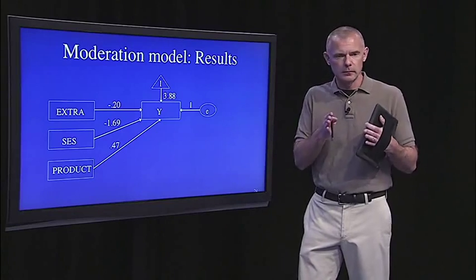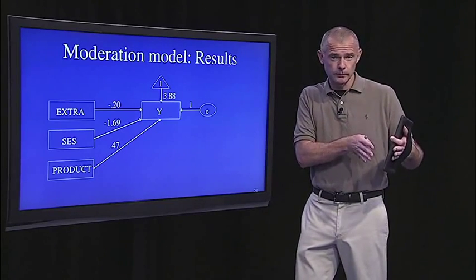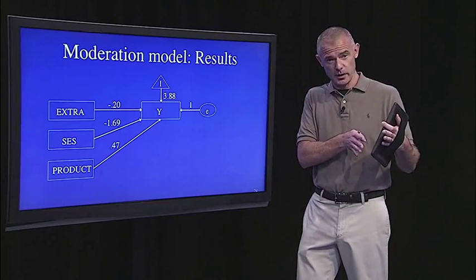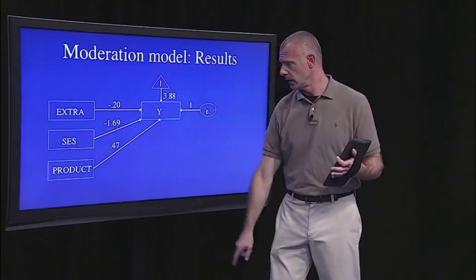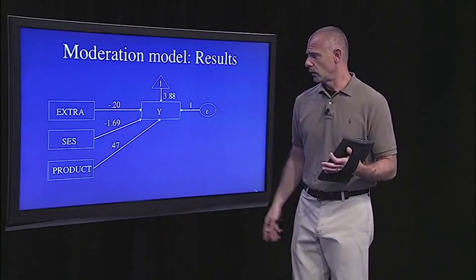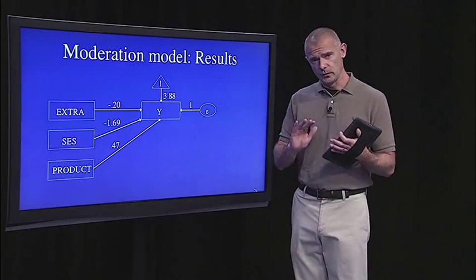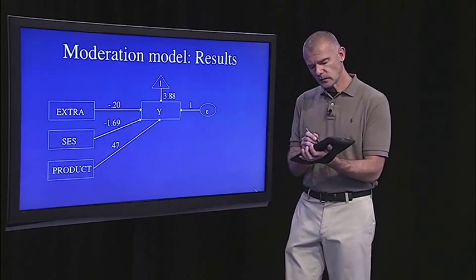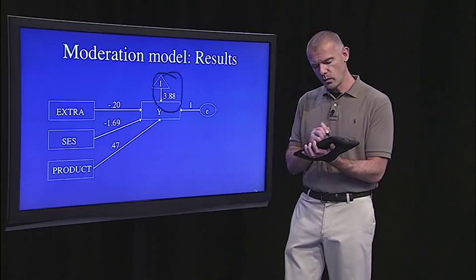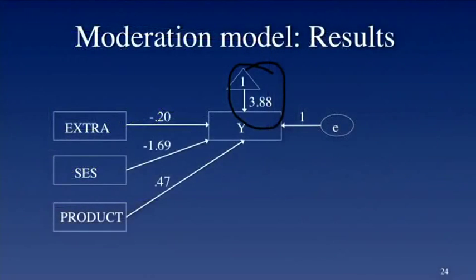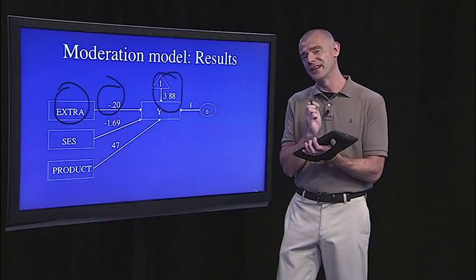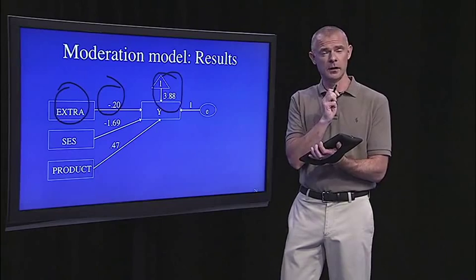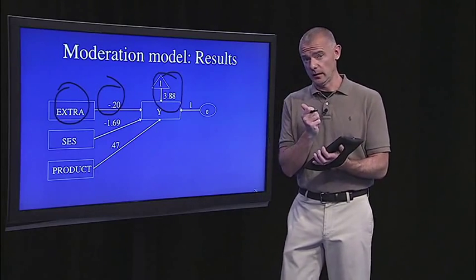So imagine that you're low SES, you were coded with zero. Well, then the calculations actually become pretty easy. Because if SES is zero, then that drops out, and so does that. So all you're left with if you're low SES is your predicted score on Y is 3.88 plus extraversion times negative two. So what that's saying is if you're low SES, there's a negative relationship between extraversion and happiness. That's the opposite of what we saw in the last lecture.